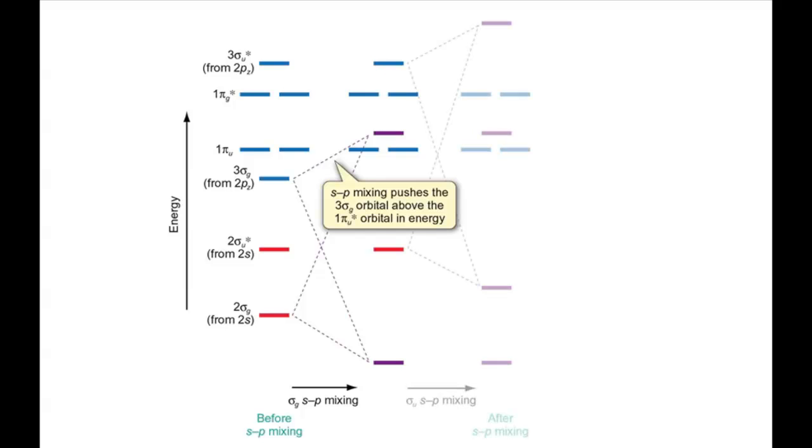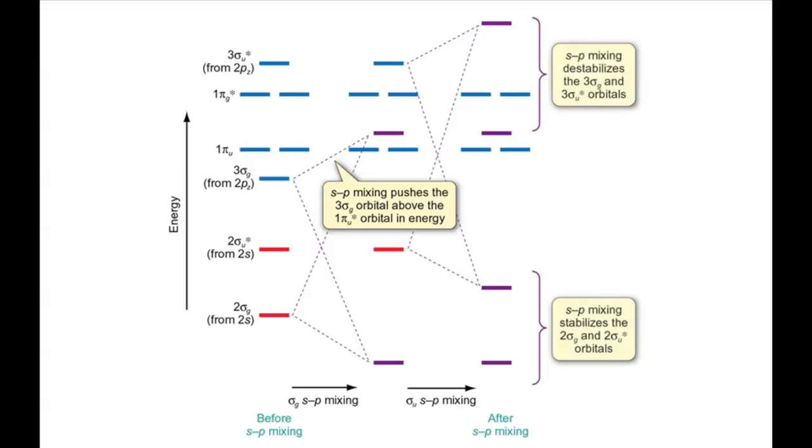A similar thing happens with the sigma-u orbitals. This process is known as SP mixing, and its effect is to stabilize the two sigma-g and two sigma-u orbitals, and destabilize the three sigma-g and three sigma-u orbitals.